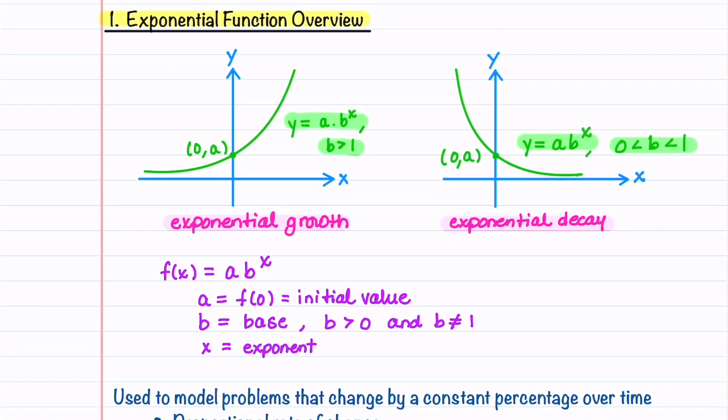Let's look at our function in a little bit more detail. An exponential function is written as f of x equals a times b raised to the x. a is our initial value, and it can be found by letting x equal 0. b is our base, and it's greater than 0, and it's not equal to 1. x is called the exponent.